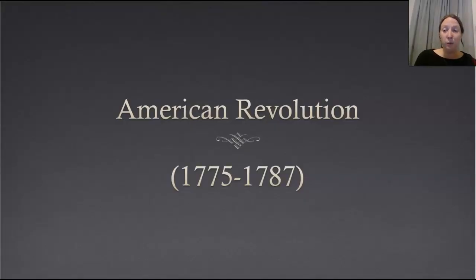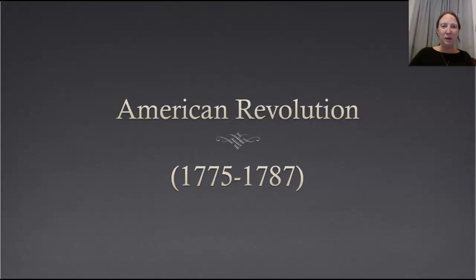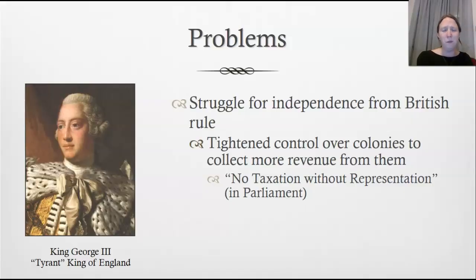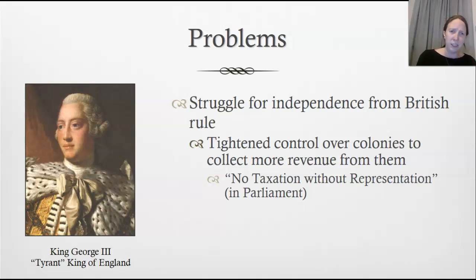The first one I'm going to cover in the simplest way is the American Revolution. I'm covering it simply because you should at some point get more detail in your US history class. It took place between 1775 and 1787. What were the problems? Overall, it was the struggle for independence from British rule. The British had tightened their control over the colonies, taxing them for everything and making laws without their consent.